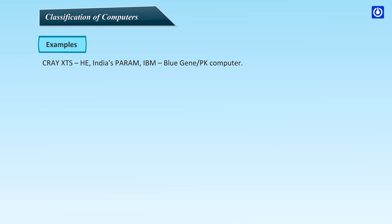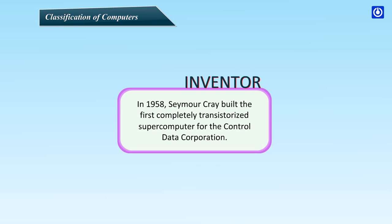Examples of Supercomputers: In 1958, Seymour Cray built the first completely transistorized supercomputer for the Controlled Data Corporation.